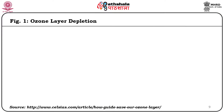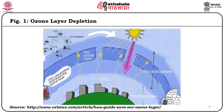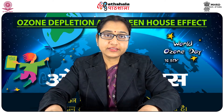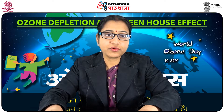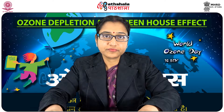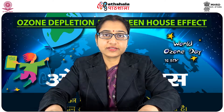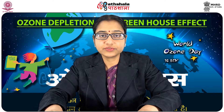This picture shows ozone layer depletion. You can see that chlorofluorocarbons are being emitted and reach the ozone layer. They are getting broken down by ultraviolet radiation, and chlorine atoms are being released. This leads to the formation of holes in the ozone layer, and harmful ultraviolet rays are coming through those holes.